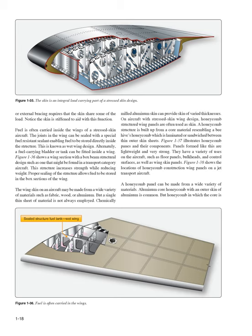The wing skin on an aircraft may be made from a wide variety of materials such as fabric, wood, or aluminum, but a single thin sheet of material is not always employed. Chemically milled aluminum skin can provide skin of varied thicknesses. On aircraft with stressed-skin wing design, honeycomb structured wing panels are often used as skin. A honeycomb structure is built up from a core material resembling a beehive's honeycomb which is laminated or sandwiched between thin outer skin sheets. Panels formed like this are lightweight and very strong. They have a variety of uses on the aircraft, such as floor panels, bulkheads, and control surfaces, as well as wing skin panels.